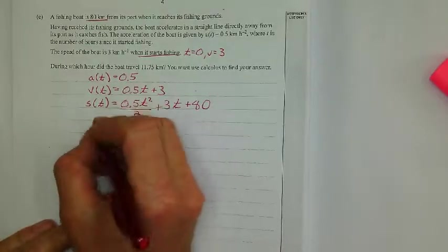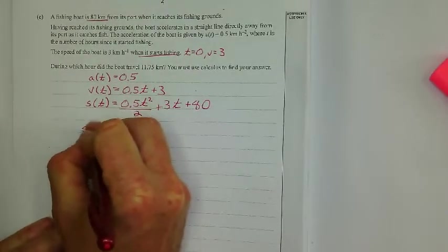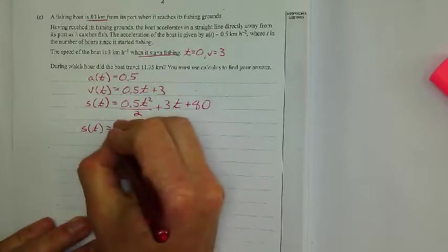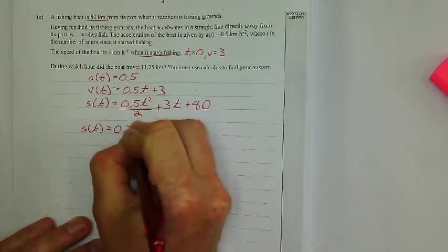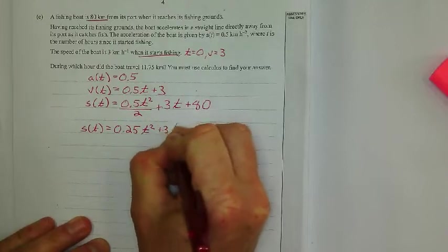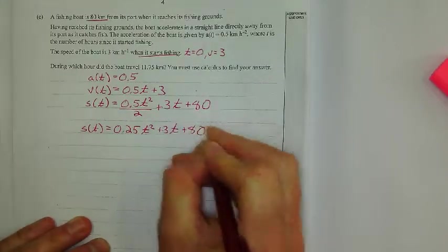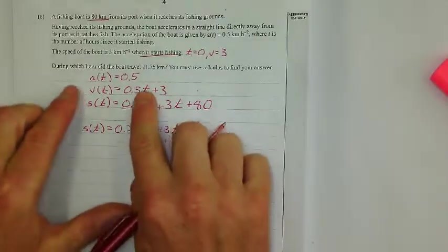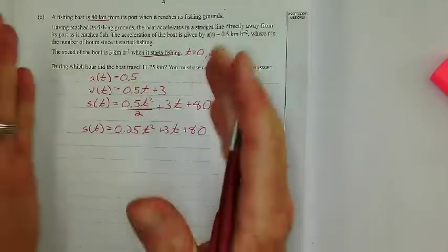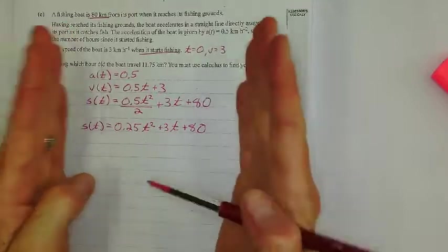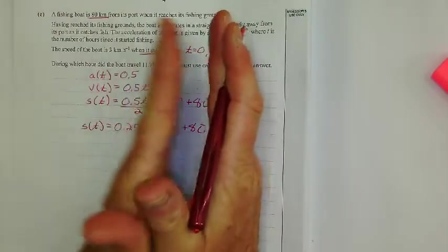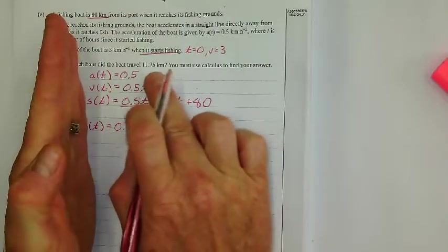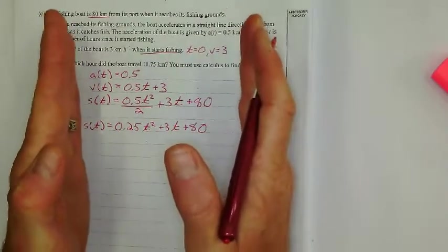So what do I do next? I just cleaned this up a little bit. 0.5 divided by 2. I don't need that as a fraction, really. And I just wrote 0.25t squared plus 3t plus 80. All right. So here's where it starts getting pretty big because what it means is during which hour means between which two hours. Like between hours 5 and 6. So really there's an hour time span that's gone by where I've traveled 11.75 kilometers. And that's what I need to figure out.